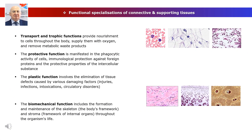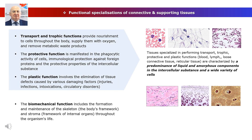The diversity of cell specializations in the tissues of the internal environment underlies the maintenance of their basic functions. Transport and trophic functions provide nourishment to cells throughout the body, supply them with oxygen, and remove metabolic waste products. The protective function is manifested in the phagocytic activity of cells; lymphocytes provide immunological protection against foreign proteins. The intercellular substance provides stability of the organism and organs to external mechanical influences — for example, collagen fibers of dense connective tissue in the skin and the amorphous substance possesses bactericidal properties.